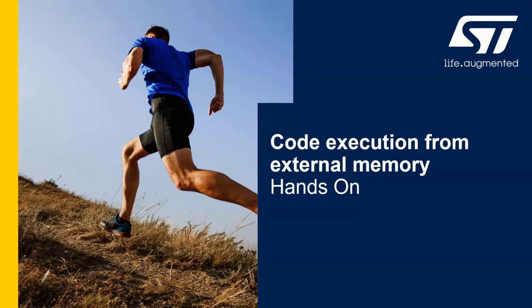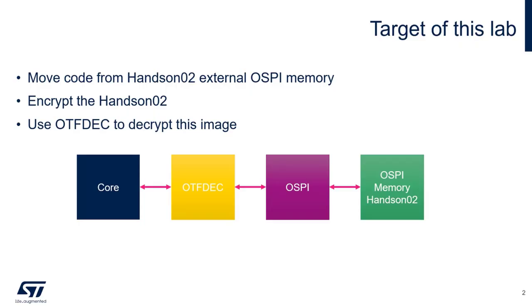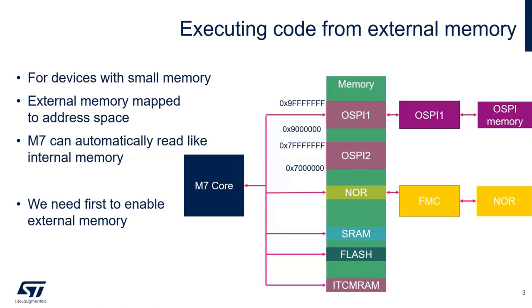In the morning, we started with the CubeMonitor and created the example working from the internal flash. Our goal for this afternoon will be to move this example, named hands-on number two, to the OctoSPI. This hands-on will be executed from the OctoSPI, and to protect this code which is normally readable from OctoSPI, we will use the on-the-fly decryption to encrypt hands-on number two so nobody will be able to read it without the key.